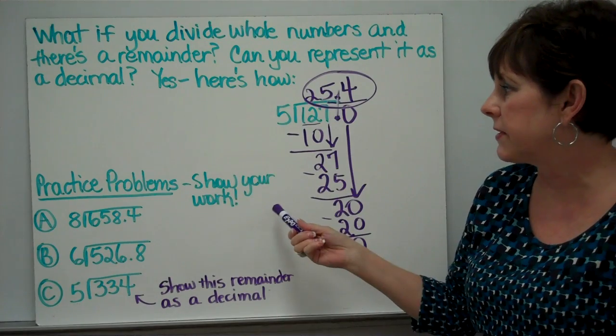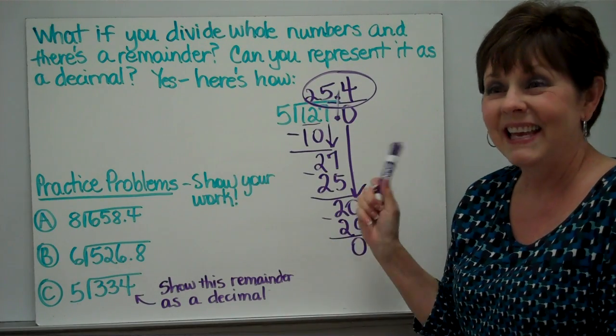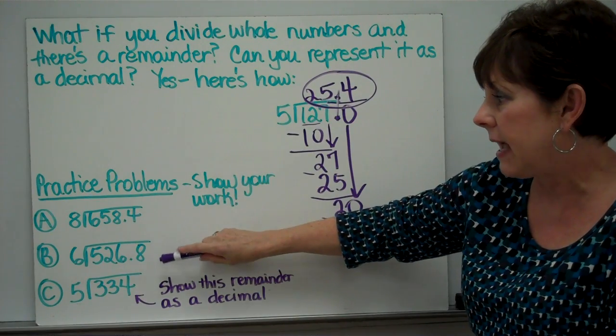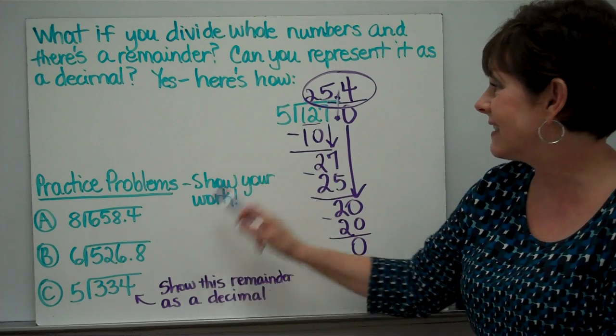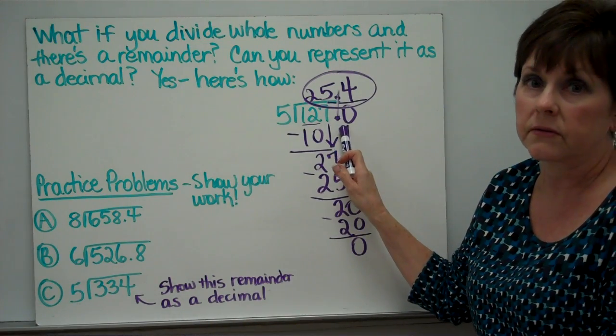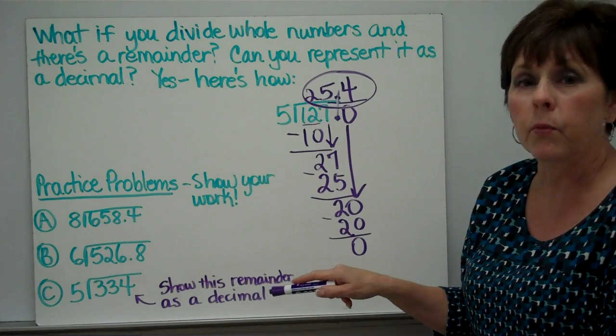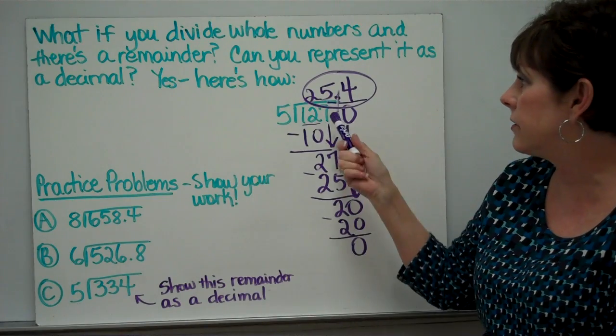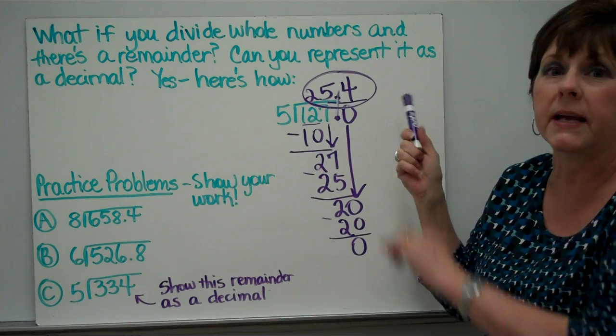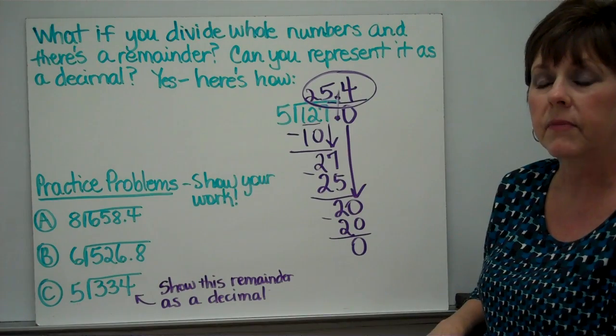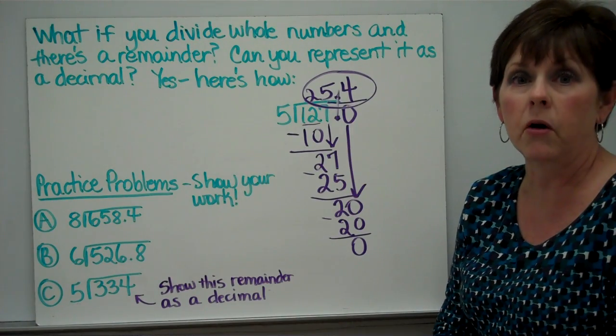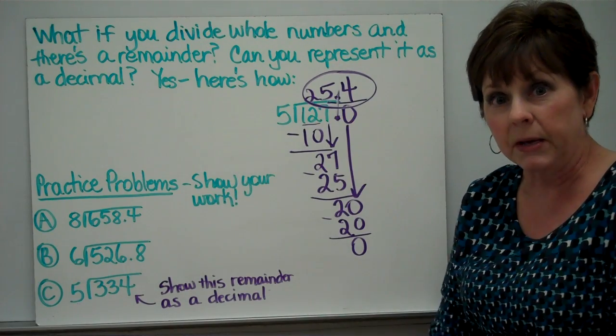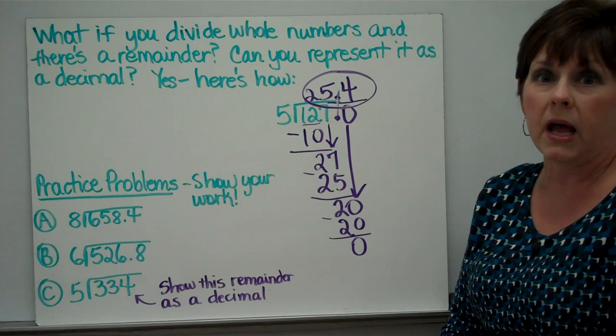Here are your practice problems for tonight. Please show your work. Either on the back or on a separate sheet of notebook paper. Here is A, B, and C. Now, this one is an example like this. I'd like for you to show this remainder, and there will be a remainder, show it as a decimal. Work it out. If you're not sure how to do it, go back and look at this frame again. Replay it again so you can see what to do. And if you have any questions, please let me know tomorrow. Some of you aren't saying anything. You're just sitting there and keeping it to yourself. And I'd love to be able to help you. Thanks.